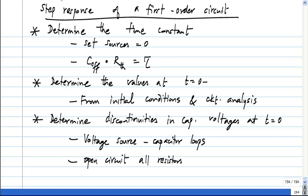You open circuit all resistors and do the circuit analysis. When you have voltage source capacitor loops, you have to do it based on charge, which is the same as saying you do it based on these Dirac delta functions of current.